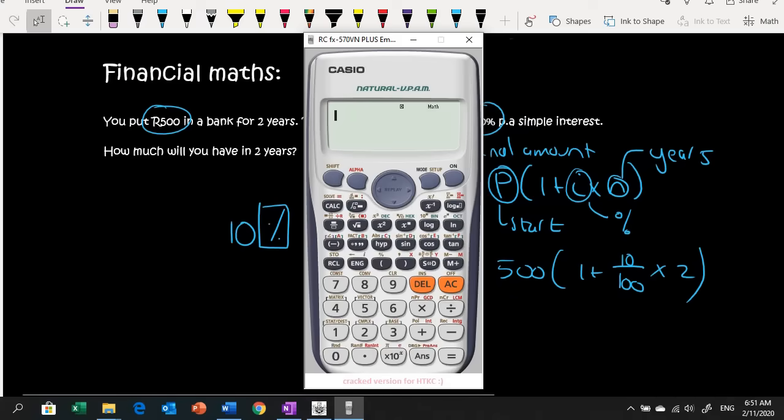So, we're going to type in the 500 Rand. You say bracket and you say 1 plus... if you want to use the percentage, you would say 10. Then you would say shift and then there's a percentage sign just above the 8 and the 9. Can you see there's a little percentage there? You'd push that but if you want to do the other method, you would say 10 over 100.